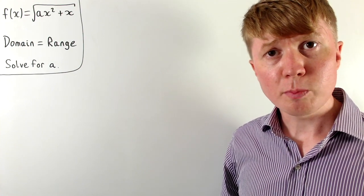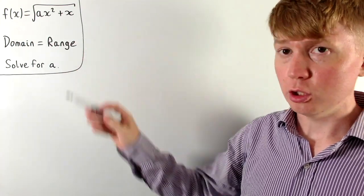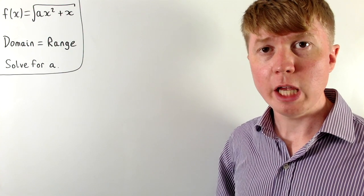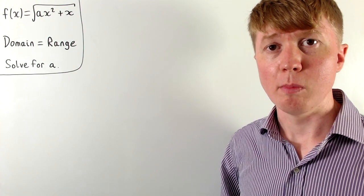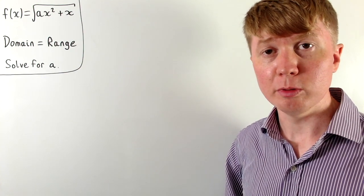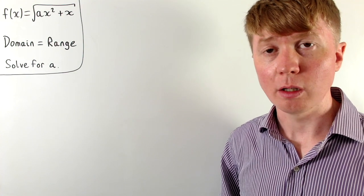We're going to solve this problem where we've got a function of this form, and we're told that its domain and range are the same. We need to find all the possible values of a so that this works.